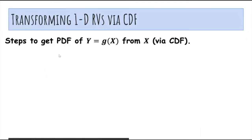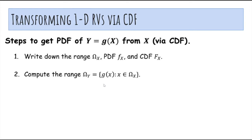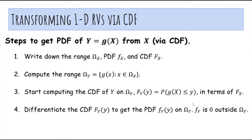In general, to get the pdf of Y = g(X) from X using the CDF method: first write down the range, pdf, and CDF of X. Then compute the range of Y, which is the set of possible values of g(X) over the entire range of X. Then compute the CDF of Y on that range — the probability that g(X) ≤ y — and write it in terms of the CDF of X. Finally, differentiate the CDF of Y to get the pdf of Y, noting that the pdf is 0 outside the range of Y.